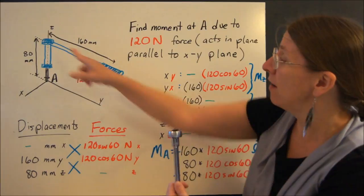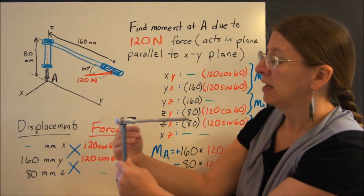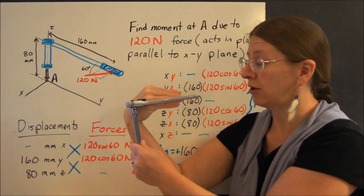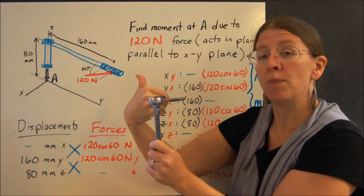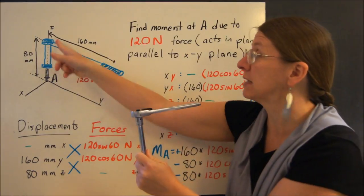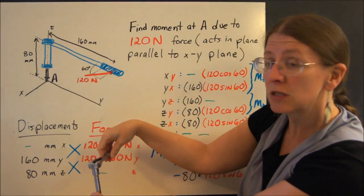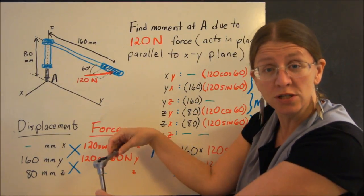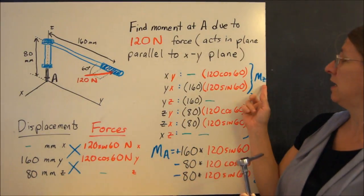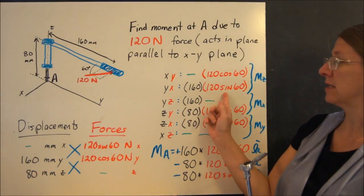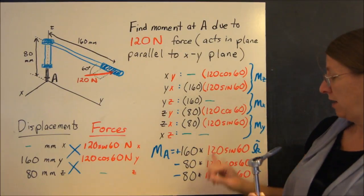Now I also have this 160. So if I put my hand out the 160 and curl back, you can see that my thumb is pointing in the positive z. This is the one that you would expect. If you're pushing on a wrench, it's going to turn this way, screwing in. So that's your z component. This one, 160 times that component. That's positive.